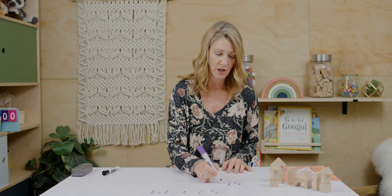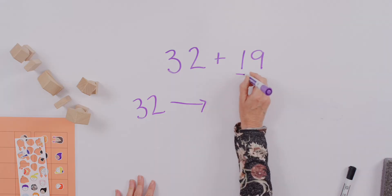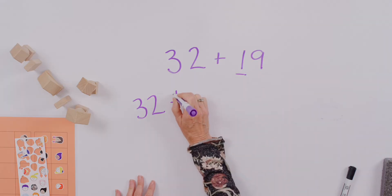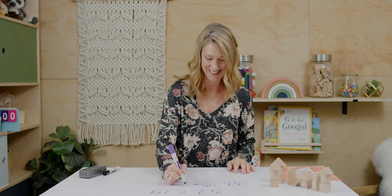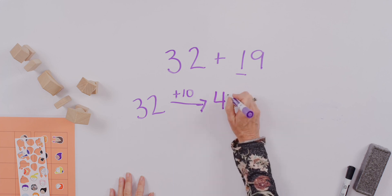Thirty-two. We're going to add the tens from this number, and it's just one ten. Thirty-two plus ten. I like it when you call it out for me. There we go. Forty-two.